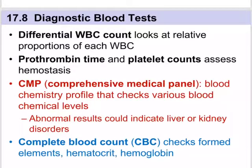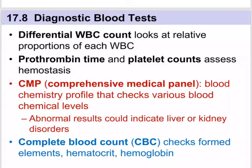Another test is prothrombin time, which measures the amount of prothrombin in the blood — and of course we just talked about how prothrombin is involved in blood clotting. Platelet counts also evaluate the status of the hemostasis system, which is the ability to stop bleeding. A comprehensive metabolic panel, or CMP, and a complete blood count, or CBC, are often done because they give a great deal of information and overall values of the condition of the blood.